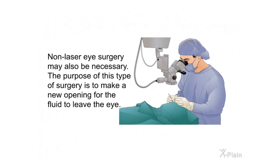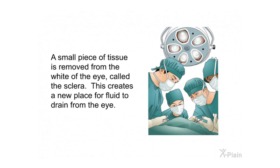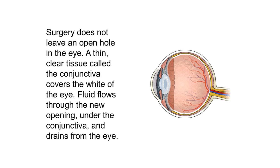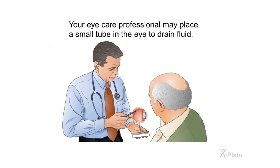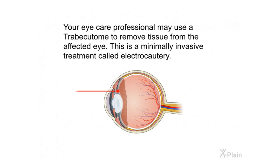Non-laser eye surgery may also be necessary, creating a new opening for fluid to leave the eye. A small piece of tissue is removed from the white of the eye, called the sclera, creating a new place for fluid to drain. A thin clear tissue called the conjunctiva covers the white of the eye, and fluid flows through the new opening under the conjunctiva and drains out. The eye care professional may also place a small tube in the eye to drain fluid, or use a trabectome to remove tissue from the affected eye in a minimally invasive treatment called electrocautery.